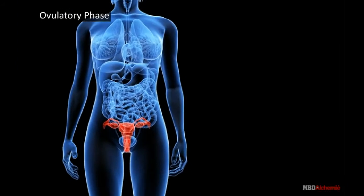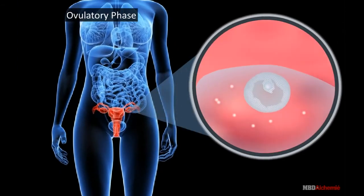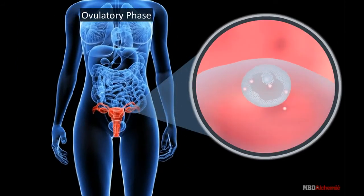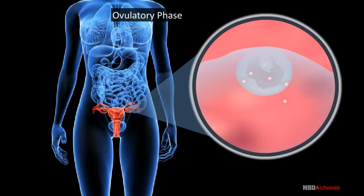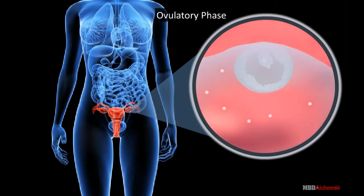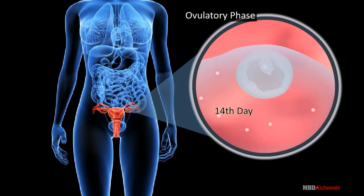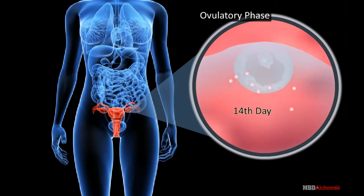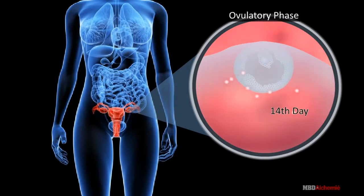Ovulatory Phase: It involves ovulation from the Graafian follicle of the ovary. It occurs midway between two menstrual cycles, on the 14th day of the onset of the menstrual cycle.